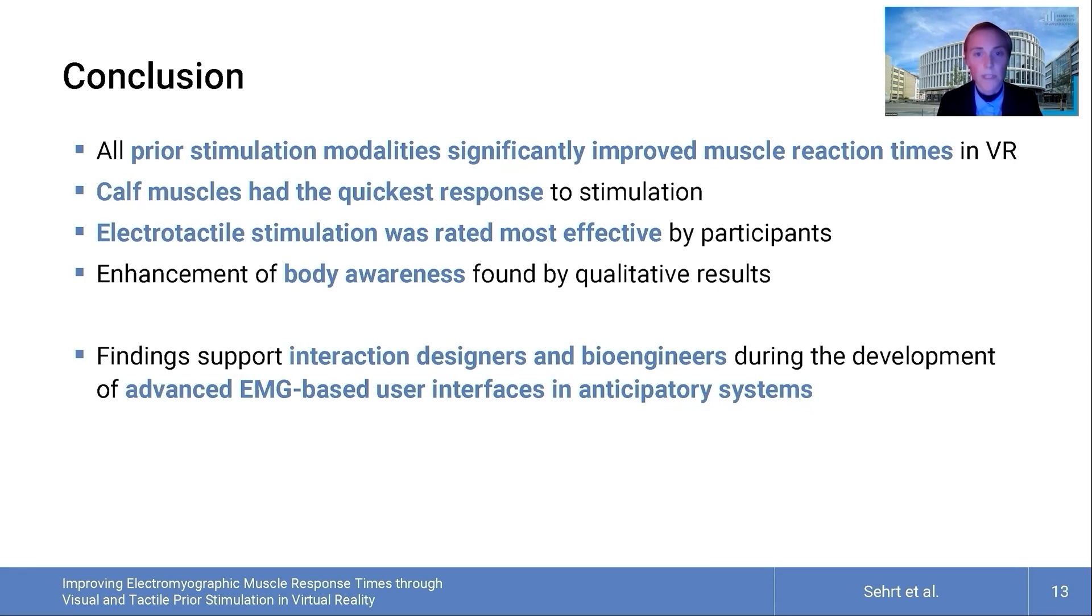This paper evaluates the stimulation of muscles using EMG before asking participants to use those muscles. The experiment aimed to identify if this pre-interaction stimulation improves the user performance. Results showed that prior stimulation reduces the time to perform isometric muscle contractions with the calf muscle showing the fastest response. And a subjective preference for electrotactile prior stimulation was found. These findings were also in line with the qualitative results where an interesting additional viewpoint was opened towards the enhancement of body awareness. Our findings are important for interaction designers and bioengineers who aim to implement input techniques for EMG-based real-time and responsive systems like typing, pointing, selecting for users with and without motor disabilities in anticipatory systems.